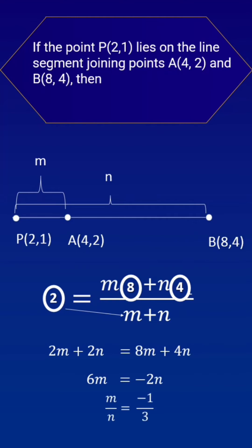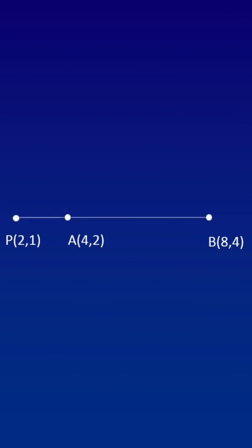By simplification we get m by n is equal to minus 1 by 3. The negative sign of the ratio says that the point lies externally and divides the line segment in the ratio 1 is to 3.